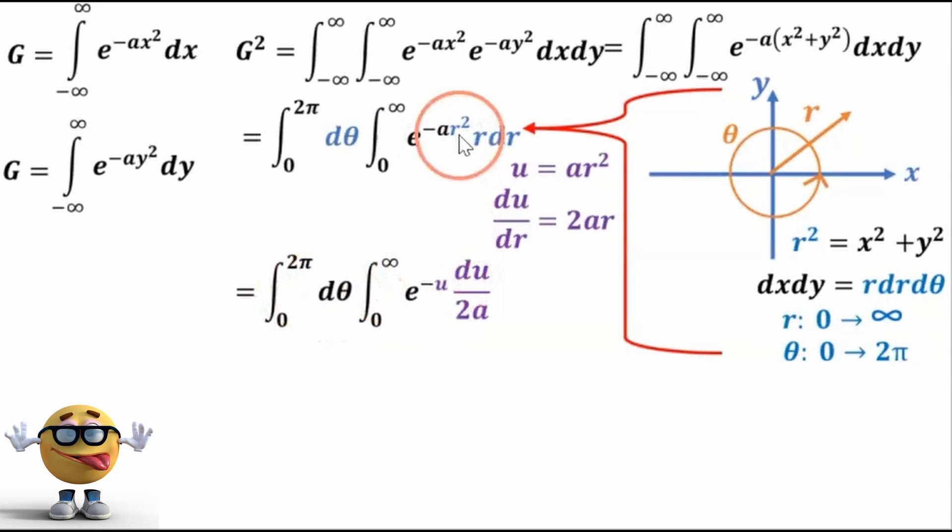And now u instead of r squared. And then our r dr is now du over 2a. I hope that makes sense. r dr, du over 2a. Okay, perfect.